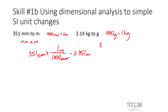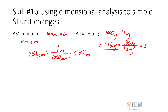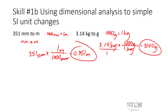The same concept applies for grams and kilograms: 1000 grams equals one kilogram. Starting with 3.14 kilograms, put one kilogram on the bottom to cancel with the numerator, and 1000 grams in the numerator. So 3.14 × 1000 = 3140 grams. You can see how dimensional analysis lets you cancel units and arrive at new useful values.